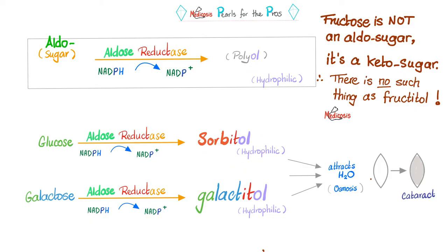Sorbitol is water soluble. Not only that, it is osmotically active — it can attract water. If it attracts water to my normally clear lens, what's gonna happen? It will turn from translucent to opaque, and that's called cataract. That is the most common eye disease, not counting errors of refraction like astigmatism, myopia, and hypermetropia.